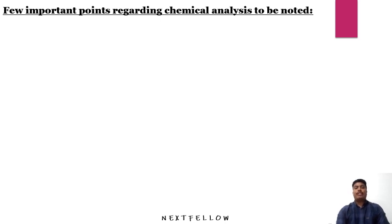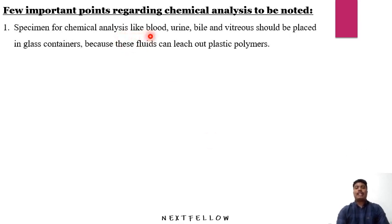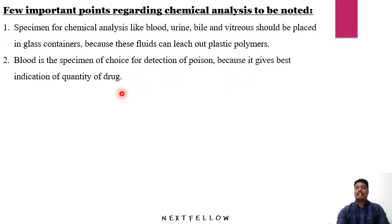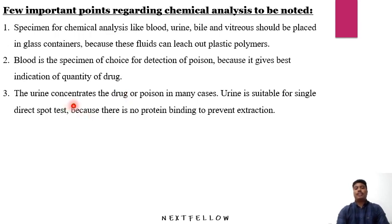For chemical analysis, specimens such as blood, urine, bile, and vitreous humor should be placed in glass containers, because these fluids can leach plastic polymers which may then go undetected in forensic science labs. Blood is the specimen of choice for poison detection as it best indicates the quantity of drug ingested. Urine concentrates the drug and is suitable for single direct spot tests as there is no protein binding to prevent extraction.